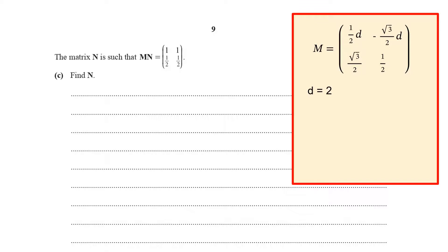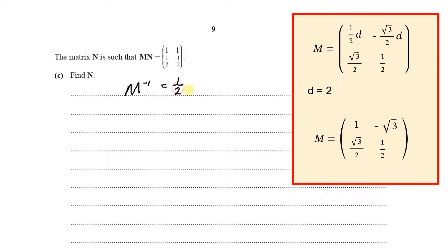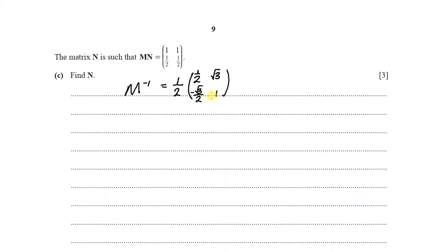The inverse of M is 1 over the determinant of M, which is 2, multiplied by the adjugate. Switching positions of 1 and ½ gives ½ and 1; and changing signs gives √3 and −√3/2. So we now have M inverse.